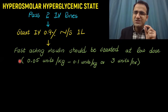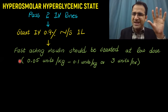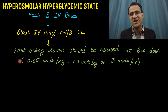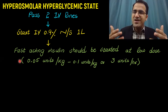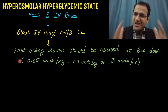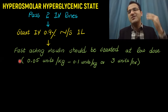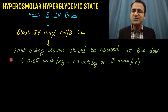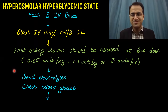You start fast-acting insulin at a low dose — 0.05 to 0.1 unit per kg — or you can simply start an infusion at 3 units per hour. Remember, insulin is not the main part of treatment of HHS; it is the fluid replacement which is the main part. Insulin is started when you are unable to control blood glucose levels despite giving fluids, and in that case you start an insulin infusion.